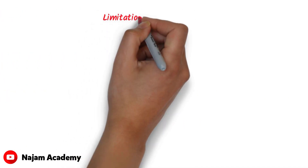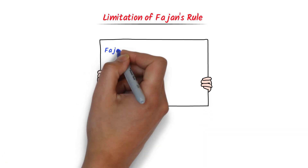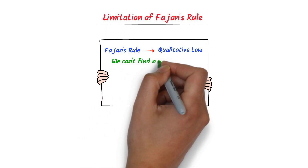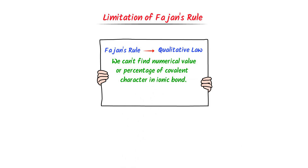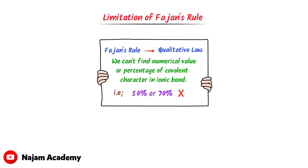Finally, a bonus concept: the limitation of Fajans' Rule. Remember that Fajans' Rule is a qualitative law, meaning we cannot find the numerical value or percentage of covalent character in an ionic bond. We cannot say 50% or 70% covalent character — rather, we only compare covalent character in ionic bonds. I hope you have learned all about Fajans' Rule.